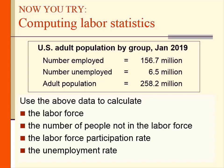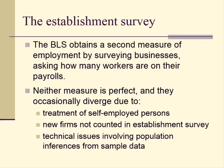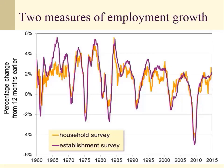Let's compute labor force statistics. Labor force equals 156.7 million employed plus 6.5 million unemployed, which equals 163.2 million. Not in the labor force equals 258.2 million minus 163.2 million, which equals 95 million. Labor force participation rate equals 163.2 over 258.2 times 100, approximately 63.2%. Unemployment rate equals 6.5 over 163.2 times 100, approximately 3.98%. The BLS also obtains a second employment measure from the establishment survey of businesses; both surveys generally move closely together despite occasional divergences.